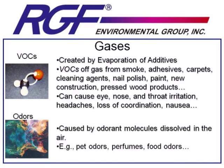Our last category of indoor air quality pollutants includes gases, like VOCs and odors. VOCs, or volatile organic compounds, are created by the evaporation of additives in products that we use every day — a process referred to as off-gassing. These additives are put into products to give them certain properties: making paints and carpets last longer and be more fade-resistant, giving pressed wood products a bright shine, and making adhesives more powerful.